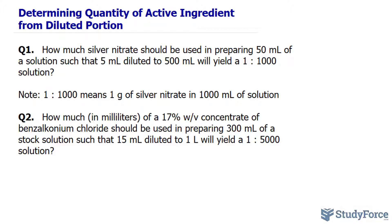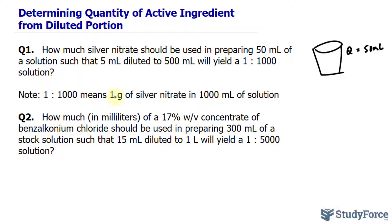They want us to prepare a solution that's 50 milliliters. So draw a beaker and write down that its volume — which I'll represent with Q for quantity — is 50 milliliters. They want you to figure out the concentration of the solution, given that when you take 5 milliliters out — so this little vial carries only 5 milliliters — and you dilute that 5 milliliters to 500 milliliters, it yields a concentration of 1 to 1,000.